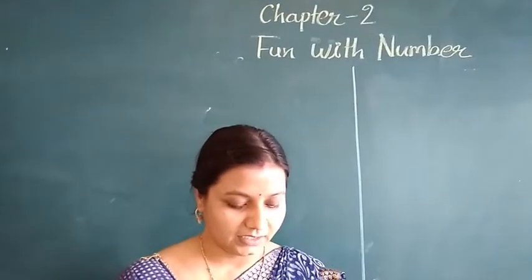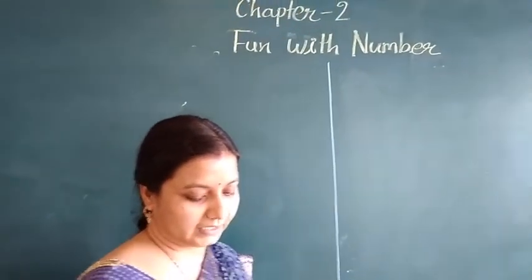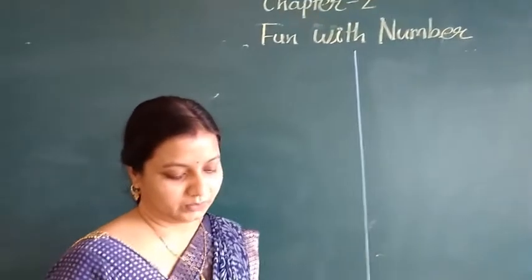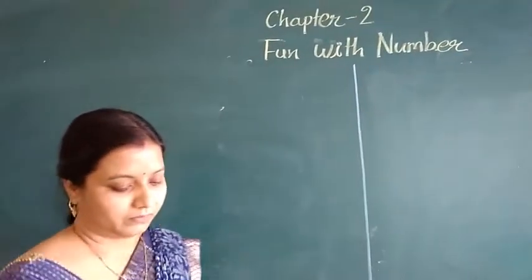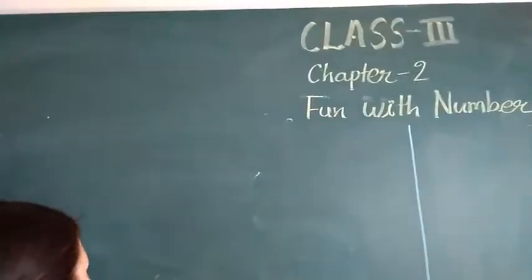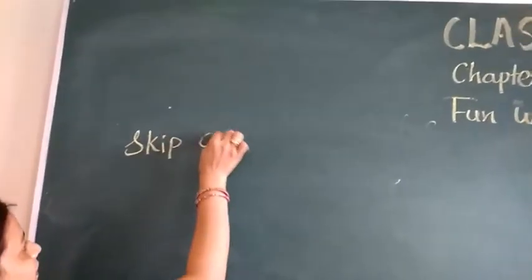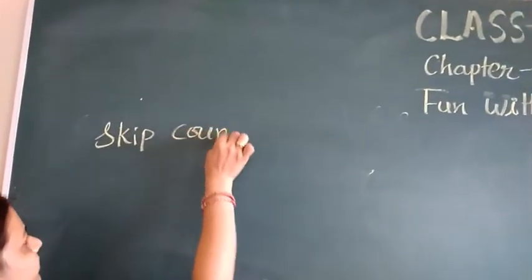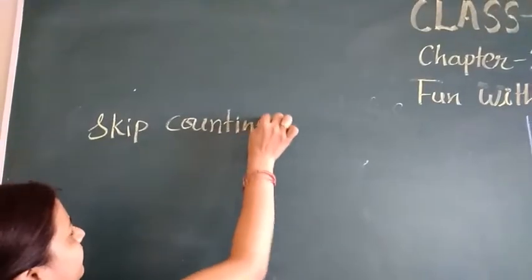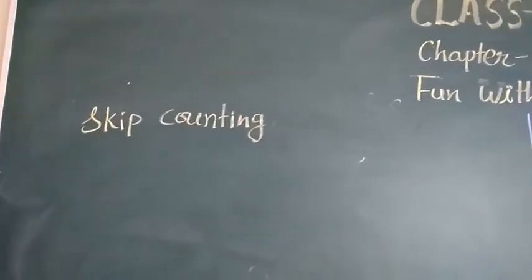I think now you are clear about place value. Now we move on to the 2nd topic of this chapter: skip counting.